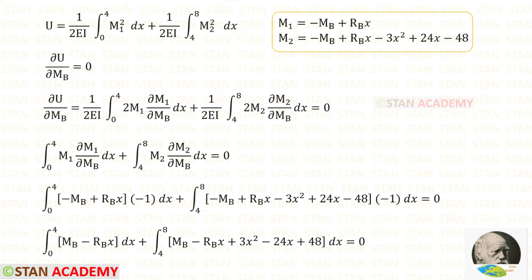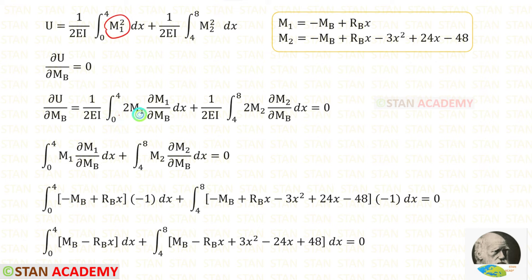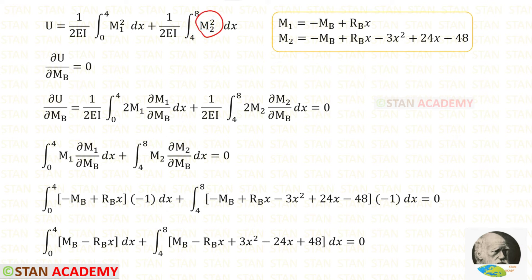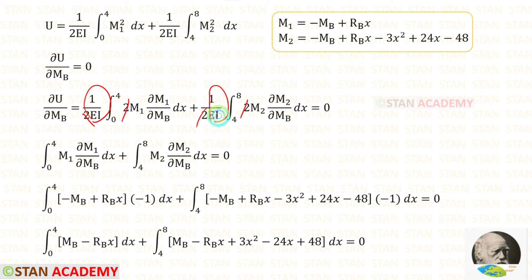We know that when we partially differentiate strain energy U with respect to Mb, it will be zero. For M1 squared, we get 2M1, and since M1 contains Mb, we differentiate M1 with respect to Mb. Similarly for M2 squared, we get 2M2, and differentiate M2 with respect to Mb. We cancel the 2s and take 1 upon EI to the other side, giving 0.